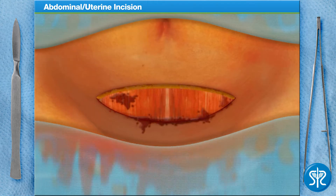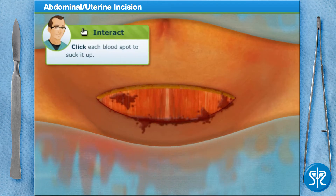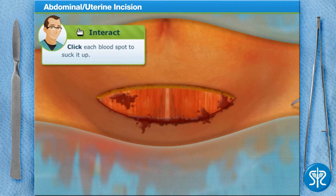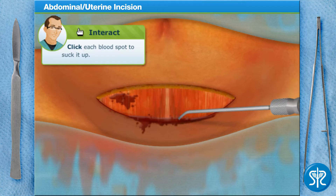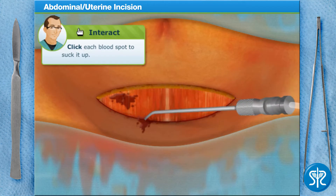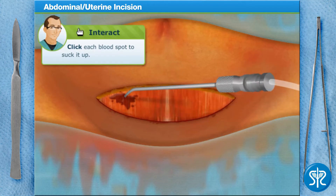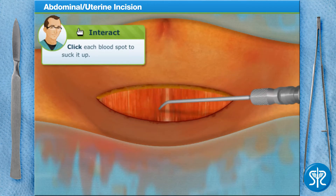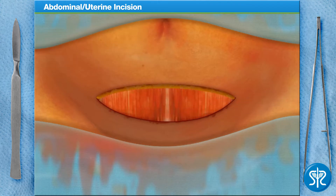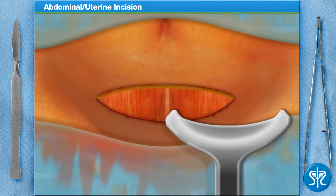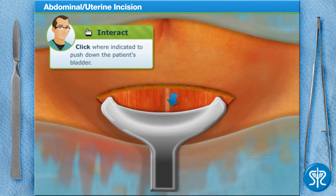It's getting a little messy in there — use the suction to clear out some of the excess blood and fluid. Insert the retractor to push down the patient's bladder.